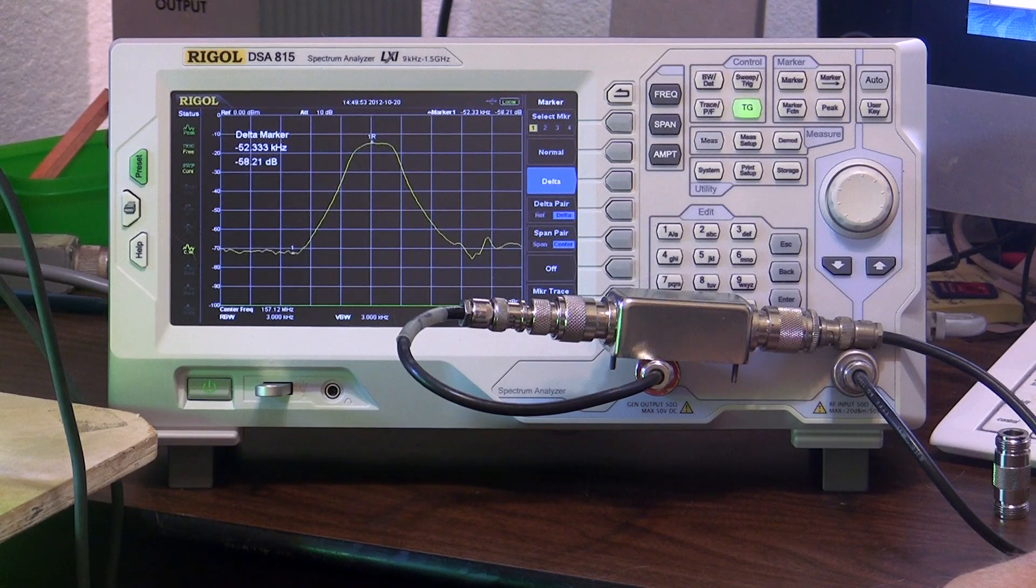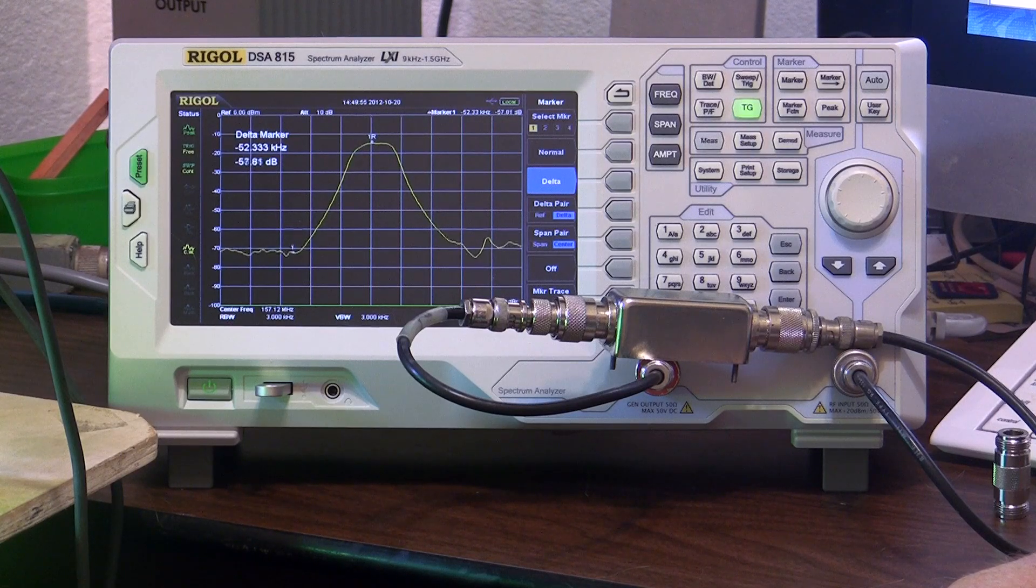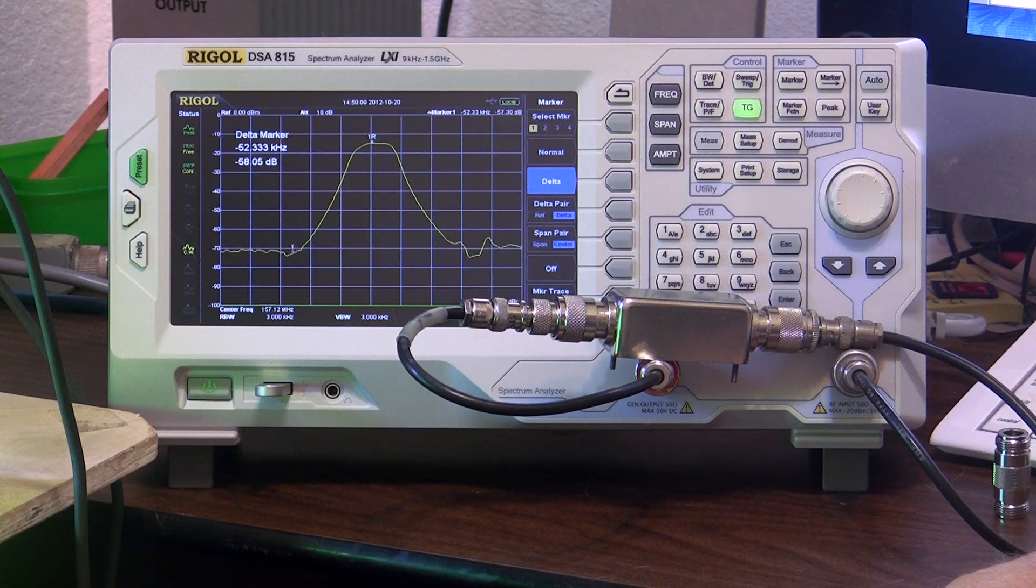Now, that's one simple demonstration of how the DSA 815 works, at least at the 150 megahertz region.